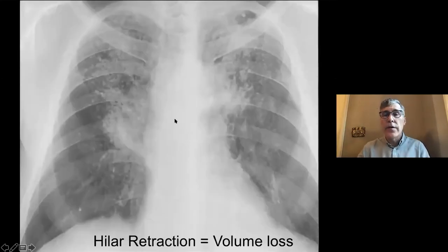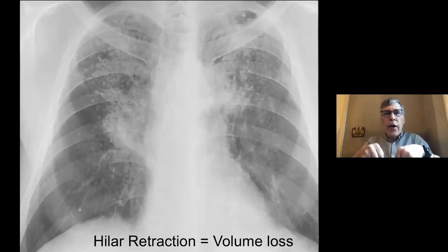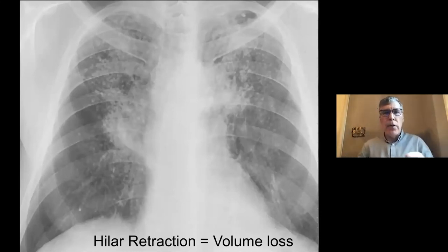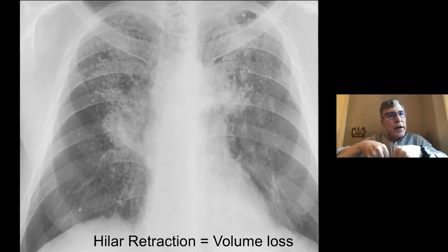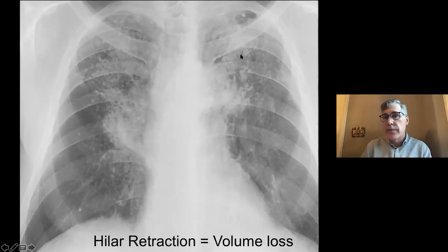Another very helpful sign of fibrosis or scarring is when the hila are pulled up — like old man's pants in Florida, pulled up high. Hilar retraction really only occurs in the chronic setting. This patient has multiple pulmonary nodules, hilar retraction, and scarring — and in this case, the diagnosis was silicosis.